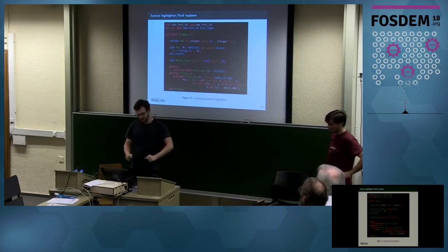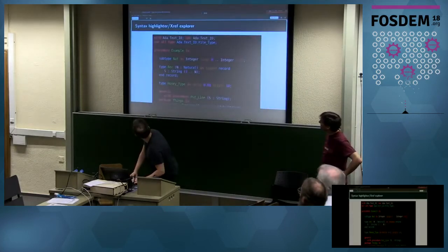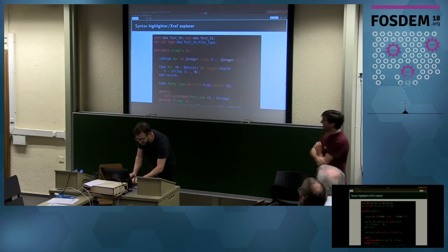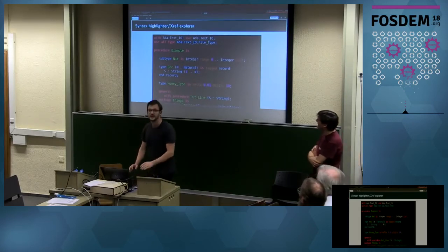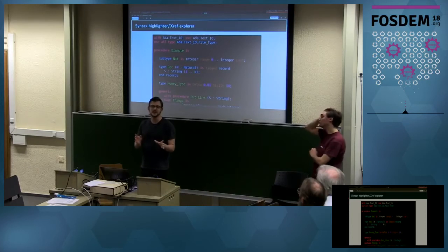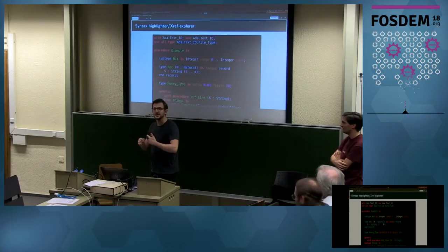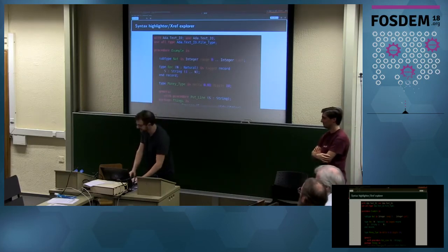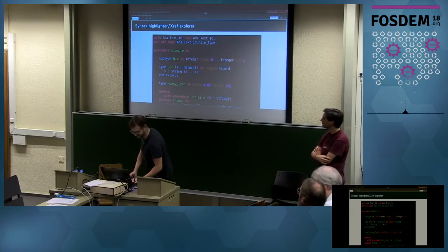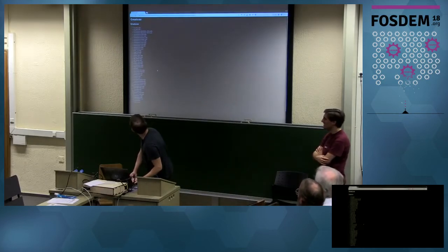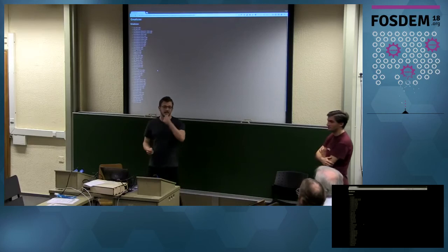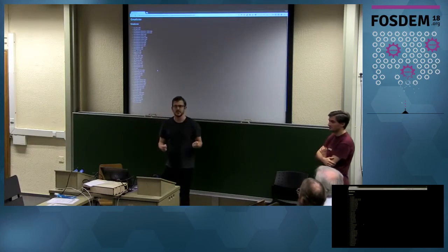So a little demo to start with. So far, we showed only Python code. The example I'm going to show is done in Ada — so we don't do only Python, we also do Ada. What it is is a syntax highlighter slash code browser — basically a very small subset of the functionalities that you want in an IDE. It's a command-line tool that you launch on your project — here it's the Gnatcov project — and it generates a hierarchy of HTML pages.